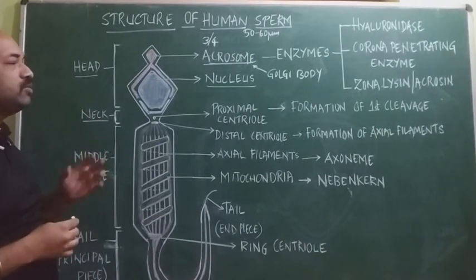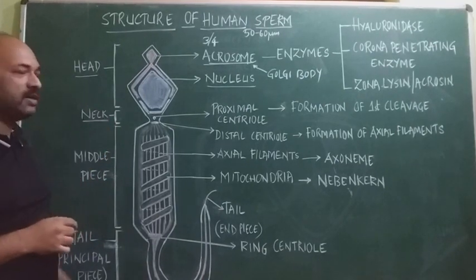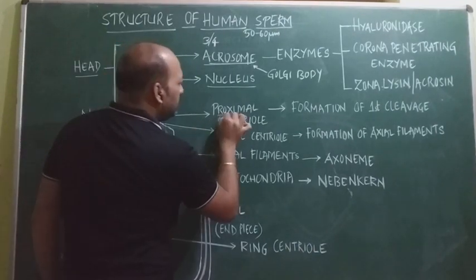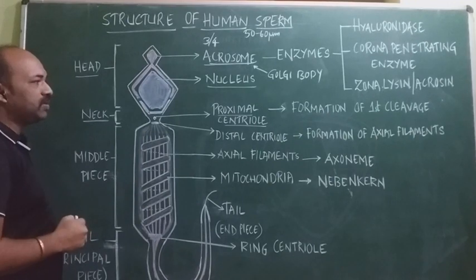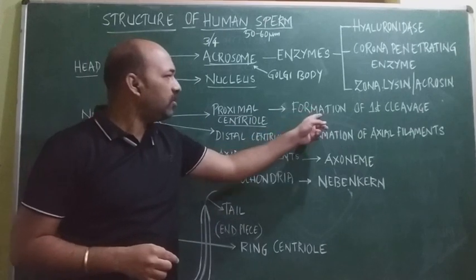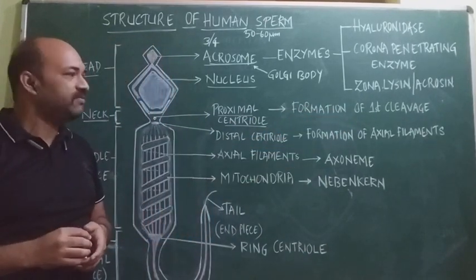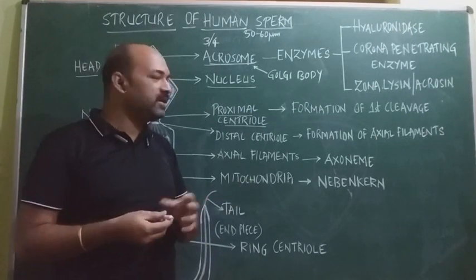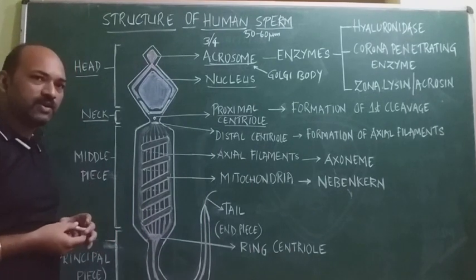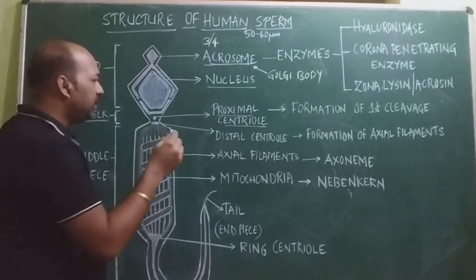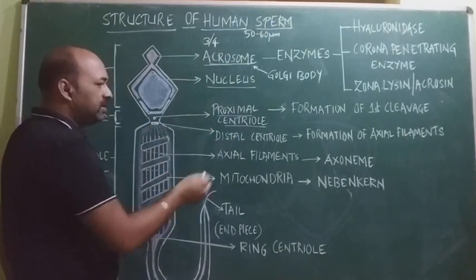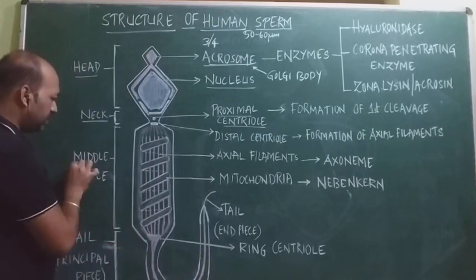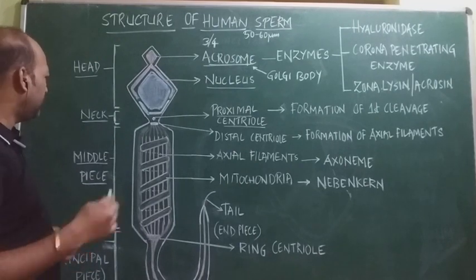The next part after the head is the neck, which is said to be the smallest part of the human sperm. The neck consists of two centrioles: the proximal centriole and the distal centriole. The proximal centriole is located just below the base of the nucleus and is involved in the formation of the first cleavage after fertilization. It also helps in the fusion of the male and female pronuclei during amphimixis or syngamy. Perpendicular to the proximal centriole is the distal centriole, which results in the formation of axial filaments present in the middle piece.